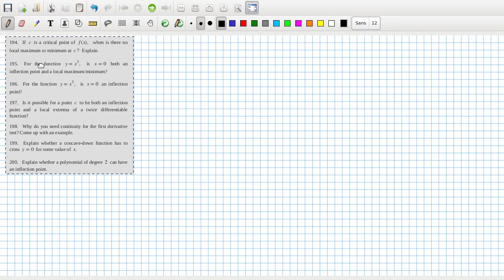If C is a critical point, when is there no local max or local min? Well, I guess if it's a saddle point. A saddle point.